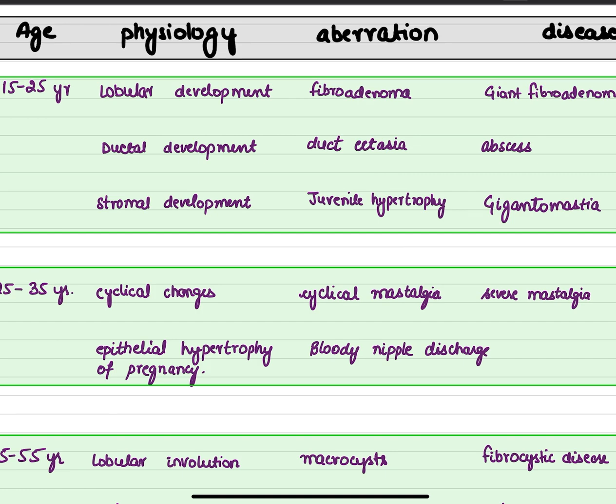In the development stage, aberrations in normal lobular development will result in the formation of fibroadenoma, and if it grows to a size greater than 5 cm it will lead to giant fibroadenoma. Aberrations in ductal development lead to duct ectasia and disease pathology such as periductal mastitis or abscess.